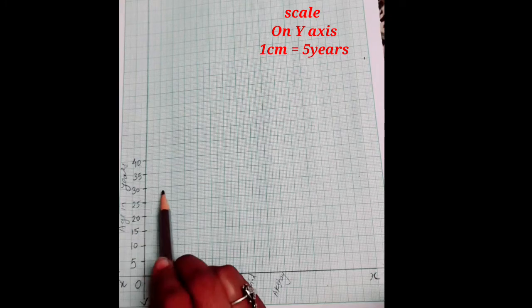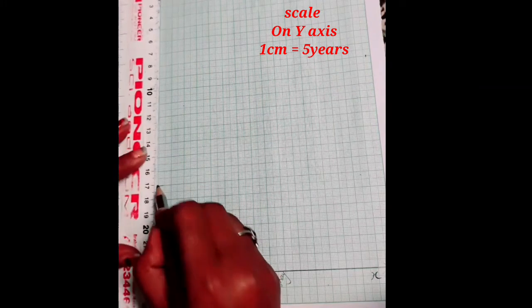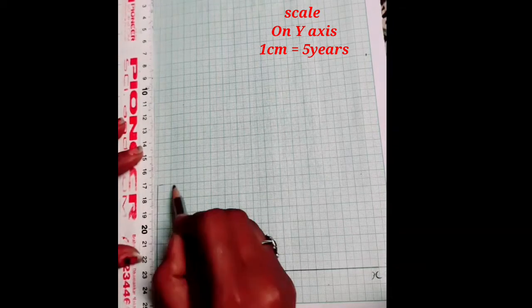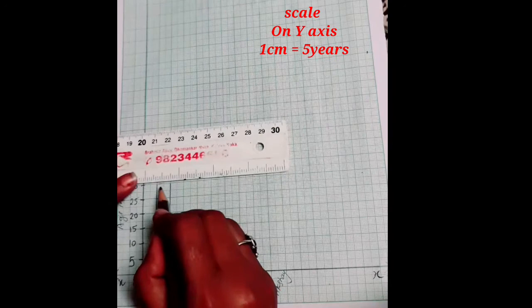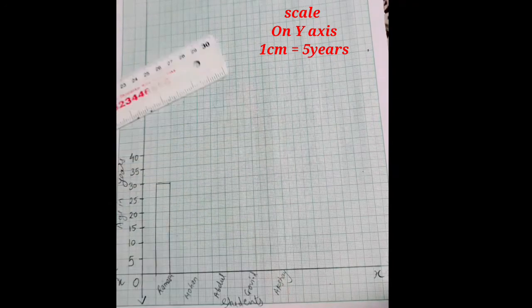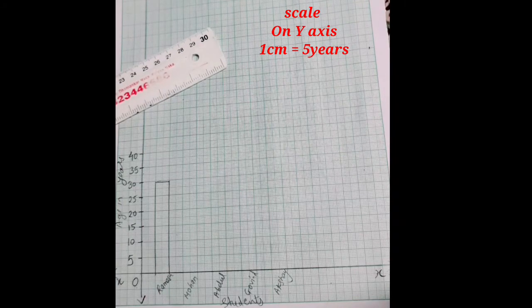And the Ramesh is given 30 years. So here 30 years is given till here. Mark till the 30. This one is given 30 years.